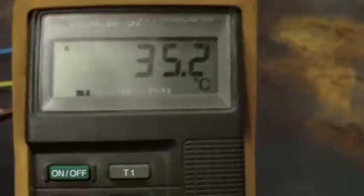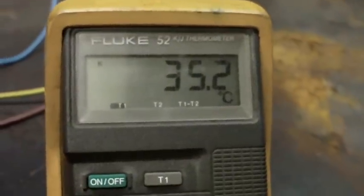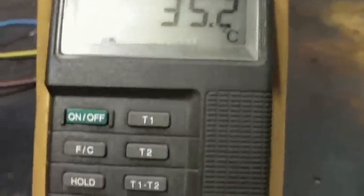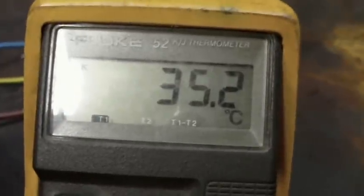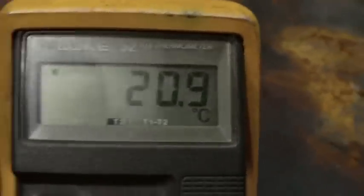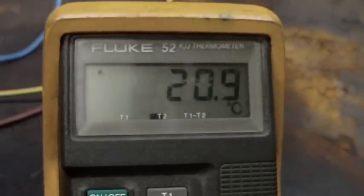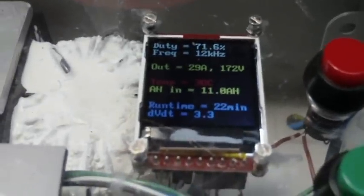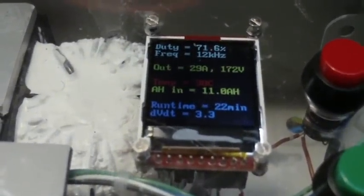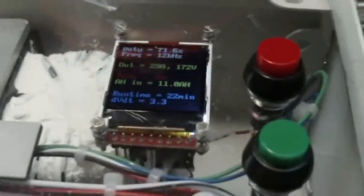This temperature probe here is on the IGBT base plate, and this one if I select T2, that's on the radiator. And the actual probe here on the charger is actually on the inductor, which is currently at 38 degrees centigrade.